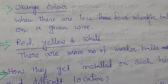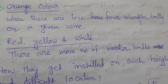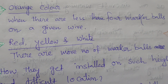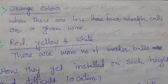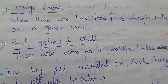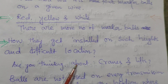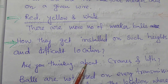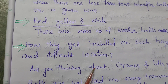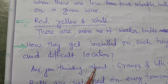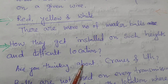Generally, orange color marker ball is used more than the other colors. When there are fewer than four marker balls on a given wire, we use the orange color ball. When there are more marker balls, we use red, yellow, and white colors. These balls are used in hilly areas, valley areas, river crossings, and runway crossings — very difficult or dangerous locations.